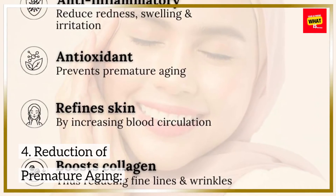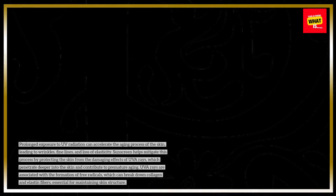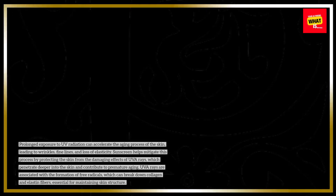4. Reduction of Premature Aging: Prolonged exposure to UV radiation can accelerate the aging process of the skin, leading to wrinkles, fine lines, and loss of elasticity. Sunscreen helps mitigate this process by protecting the skin from the damaging effects of UV rays, which penetrate deeper into the skin and contribute to premature aging. UV rays are associated with the formation of free radicals, which can break down collagen and elastin fibers, essential for maintaining skin structure.